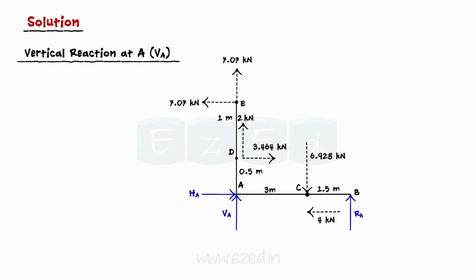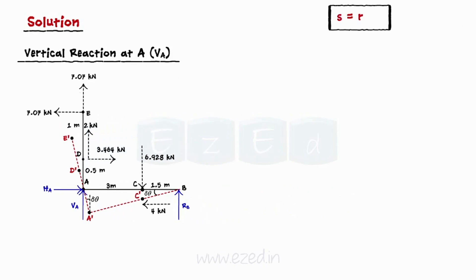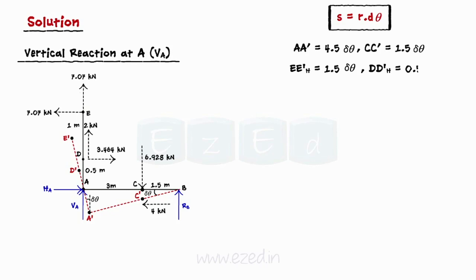Next, we will find the vertical reaction at point A. We will now impart a vertical angular displacement delta theta at B as shown. Using the distance of each point from point B and the formula S = R·dθ, where R is the distance of each point from point B, we can find the angular displacement at points A and C. The points E and D will have displacements in both horizontal and vertical directions. Displacement in the horizontal direction can be directly found by calculating the product of distance from point A and delta theta. They will have the same displacement along the vertical direction as A, D, and E are lying on the same member.